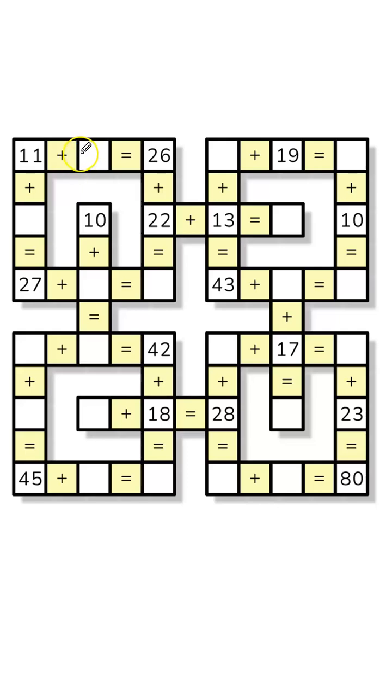Let's start out with the top left corner. We have 11 plus blank equals 26, so that's going to be 15. If I come down this way, 11 plus 16 equals 27.